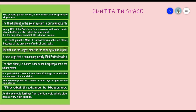The third planet in the solar system is our Earth. Nearly 70% of the Earth's surface is covered with water, due to which the Earth is also called the blue planet. It is the only planet on which life is known to exist — so far, only our Earth has life; no other planet does.